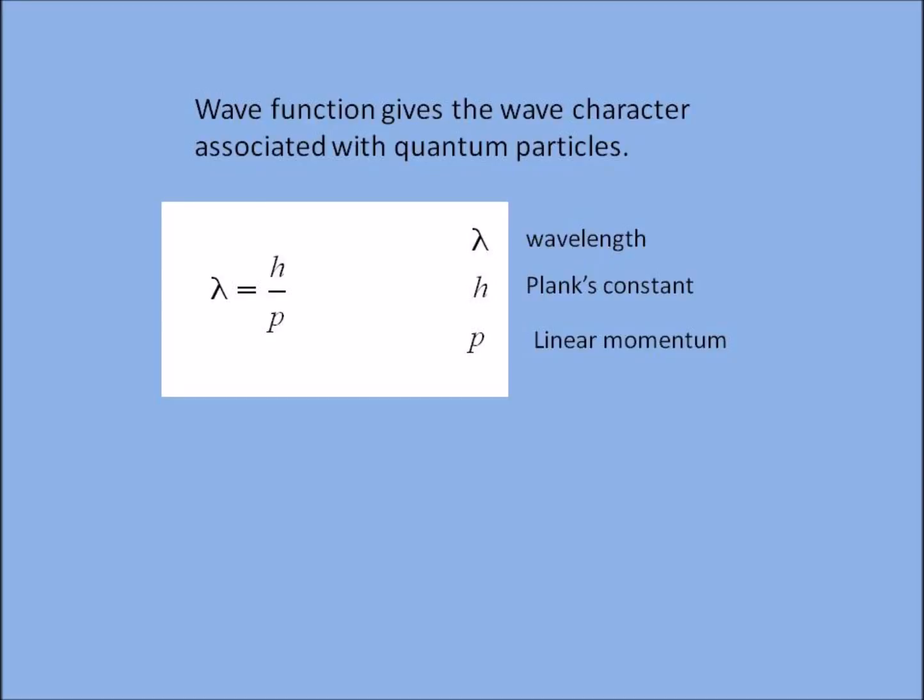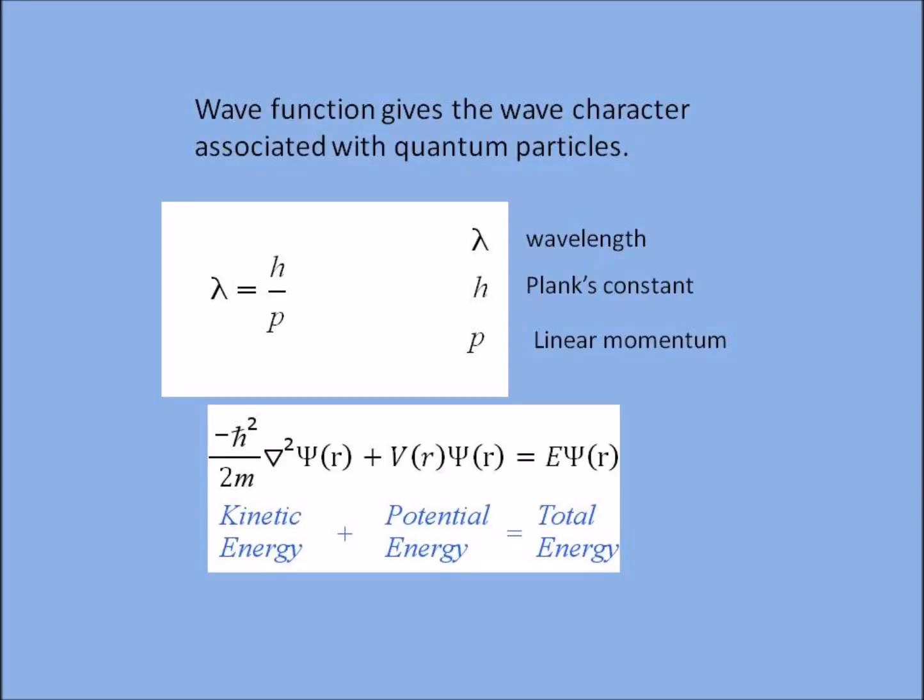Another important equation in quantum mechanics is the Schrödinger's wave equation: minus h bar squared by 2m del square psi plus V psi is equal to E psi, where V is a potential and psi is a wave function, both depends on r.